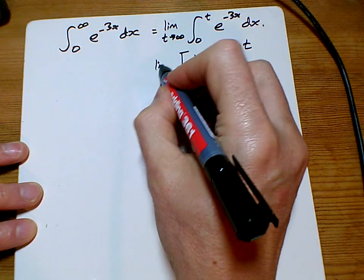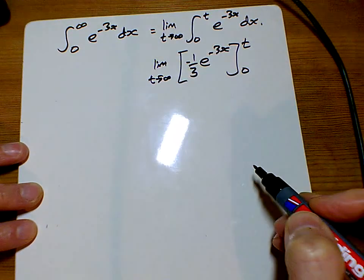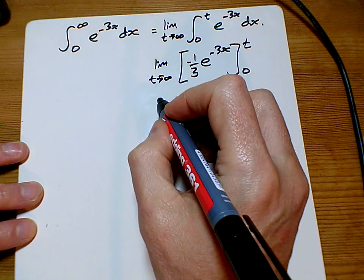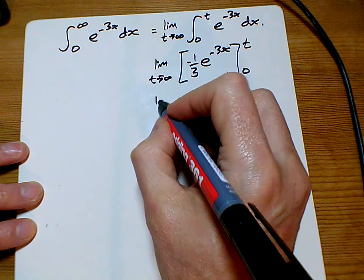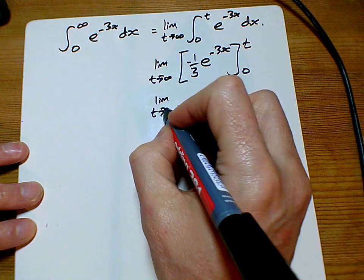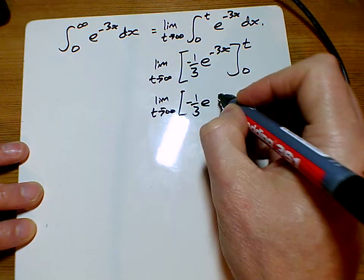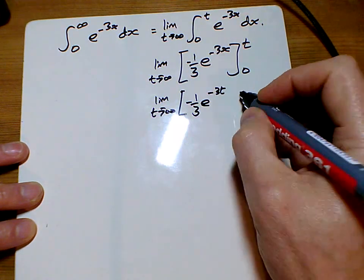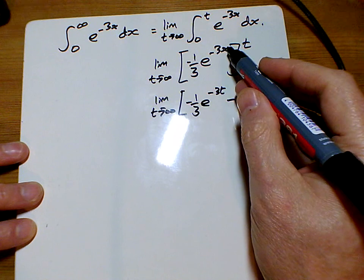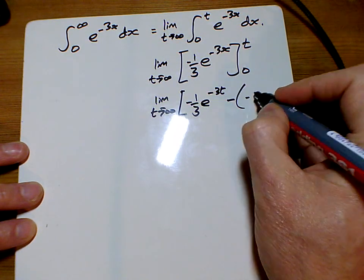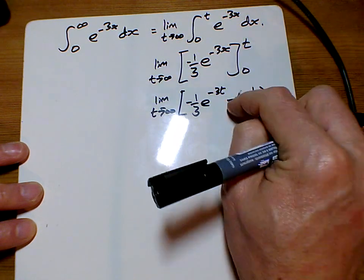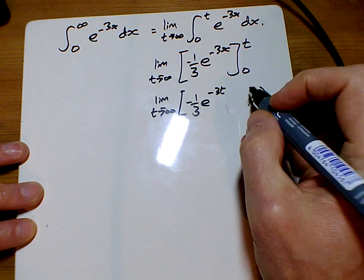That is the limit as t tends to infinity. So this is the limit as t tends to infinity of minus one third e to the minus 3t minus, stick a 0 in there, makes 1. So minus minus one third, or rather plus one third.